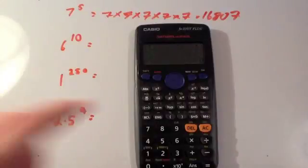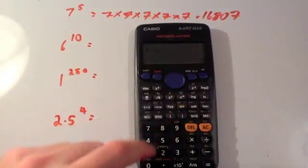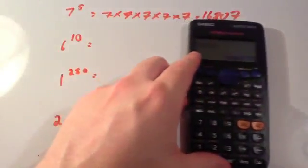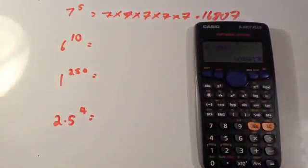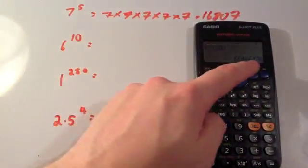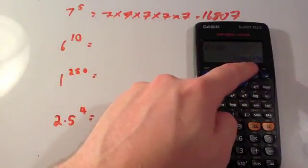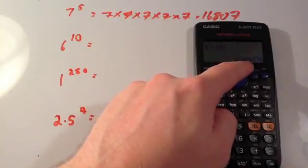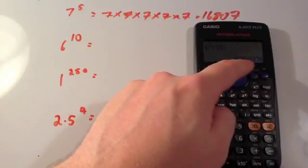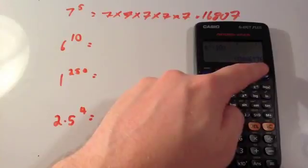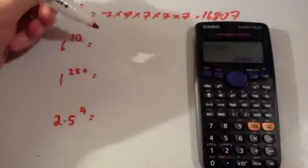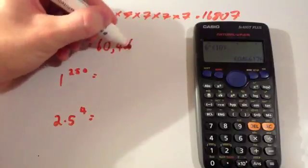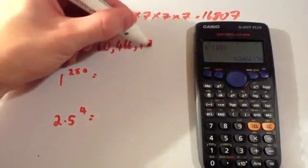6 to the power of 10: press 6, the power button, then 10, close brackets, press equals. The answer is 60,466,176.